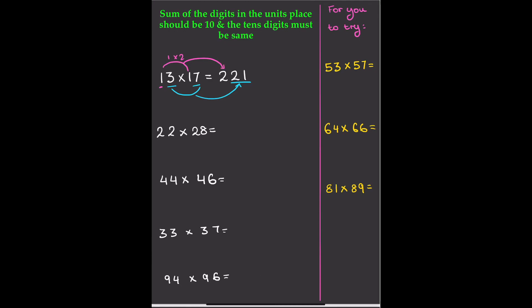Now let's do 22×28. First we multiply the units place: 8×2 = 16. Then we multiply the tens digit by its next highest number — 2×3 = 6. So the answer is 616.